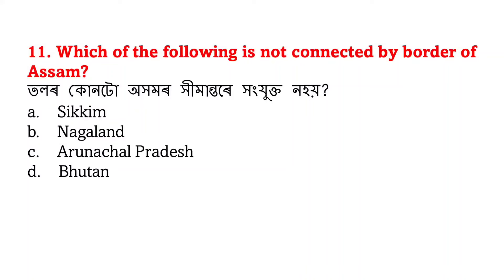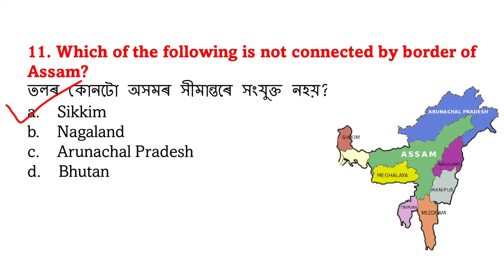Which of the following is not connected by border with Assam? Tolor kuntu ahamor himantare hongjukta na hai? The answer is E - Sikkim. Sikkim does not share a boundary with Assam. Ahamor lakat hathkhan rajjoj boundary share koriiche - remember this.